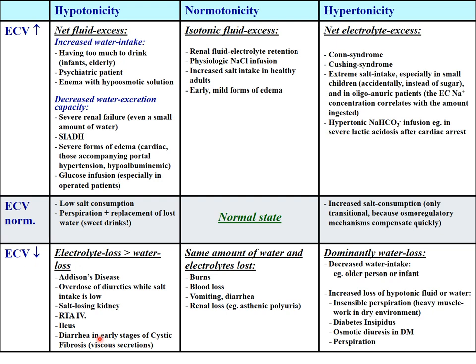Any condition that decreases both volume and sodium content. Isotonic hypovolemia — normal tonicity but low volume — happens with electrolyte loss such as burns, blood loss, vomiting, diarrhea, or renal loss especially in post-obstructive polyuria.